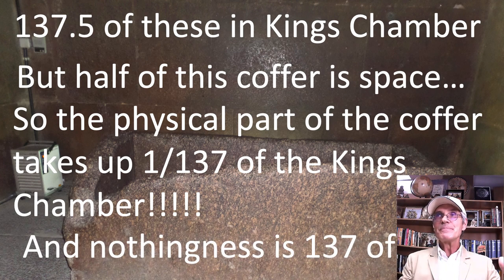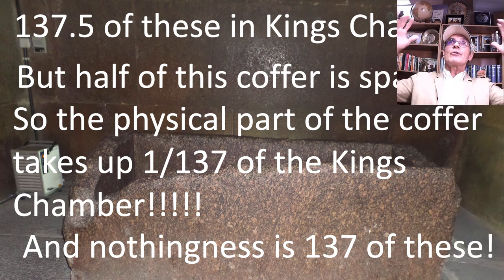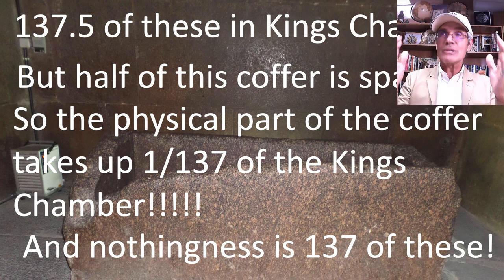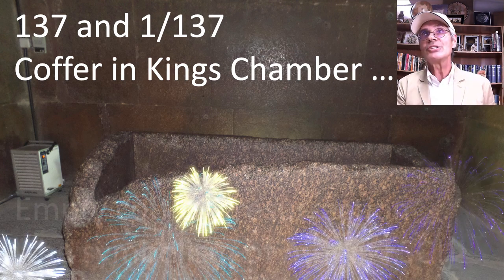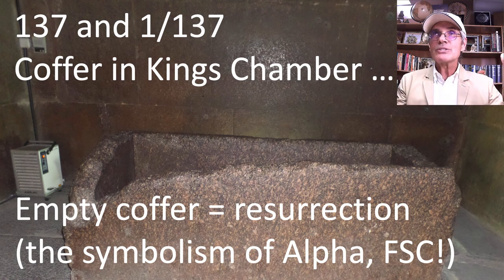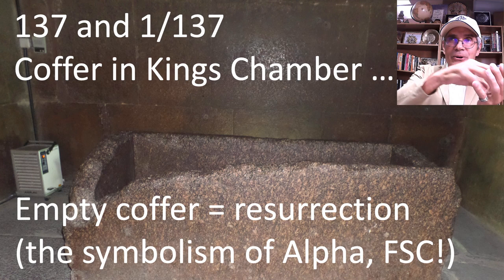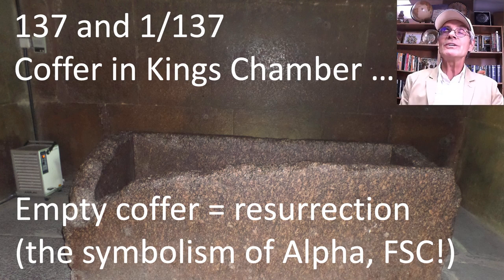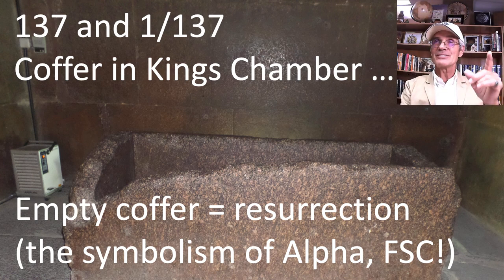Nothingness is 137 of these, because you take the empty part of the coffer plus all the other emptiness — it's 137. So the two numbers associated with the fine structure constant are here in the King's Chamber, related to the coffer. The empty coffer seems to symbolize resurrection: there's no body there. The Pharaoh, his mummy, has made it to the next life. The symbolism of alpha and the fine structure constant — the idea of flesh, electrons, matter, transforming to light and spirit, resurrection. Incredible what the Great Pyramid is saying to us, knowing the fine structure constant long before modern atomic scientists found it.